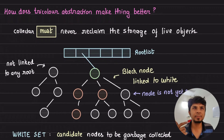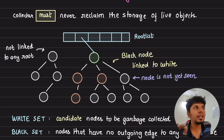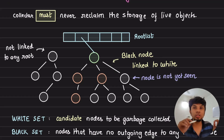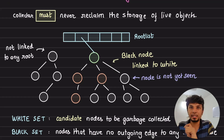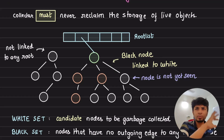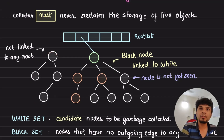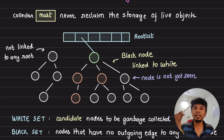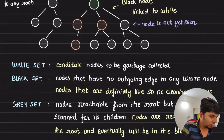What we want is correctness — our garbage collector should never reclaim the storage of live objects. Looking at a smaller version of the graph: we have a root list, nodes connected to it, and a subset of nodes not linked to any root — those four nodes are the ones that will be cleaned up. Nodes directly or indirectly reachable from the root are live, and our job is to identify this efficiently and concurrently.